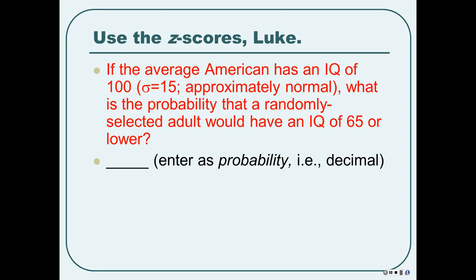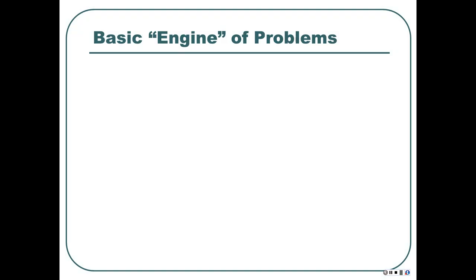Let's do another one. If the average American has an IQ of 100 with a standard deviation of 15, and the distribution is approximately normal, that's the population. What is the probability that if you randomly selected an adult from the American population — 350 million names in a hat and you drew one — that person would have an IQ of 65 or lower? We want to use the raw score to find a z-score, so that we can find an area. We don't care about the z-score for its own sake.